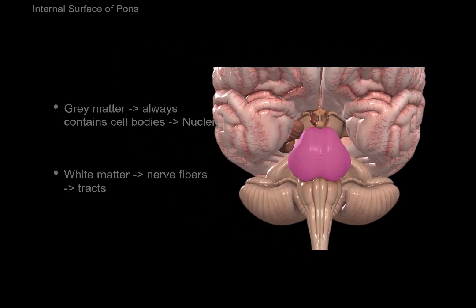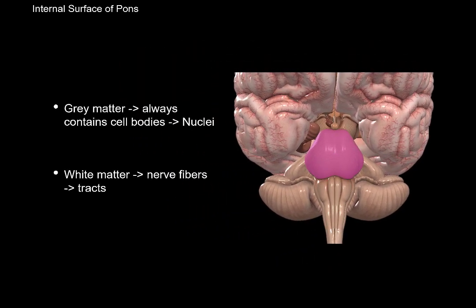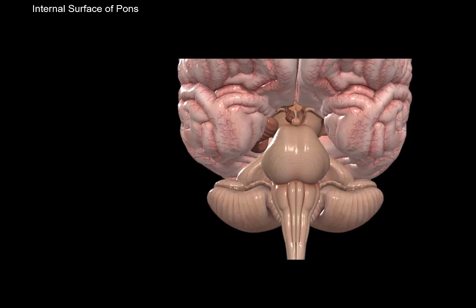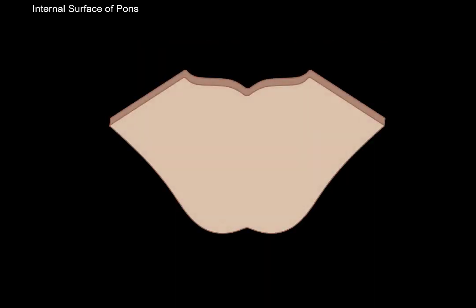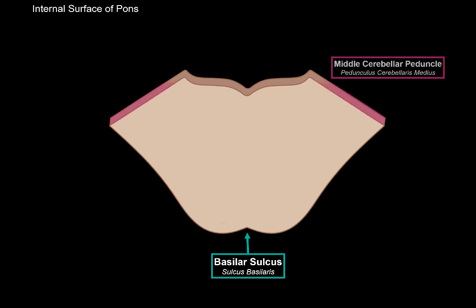Now let's look at the internal surface of pons. Keep in mind that grey matter always contains cell bodies, so all structures within the grey matter are nuclei. White matter contains nerve fibers that form tracts. This is an outline of what pons looks like in cross-section — we'll see the basilar sulcus on the anterior surface, the middle cerebellar peduncles, and the rhomboid fossa posteriorly.